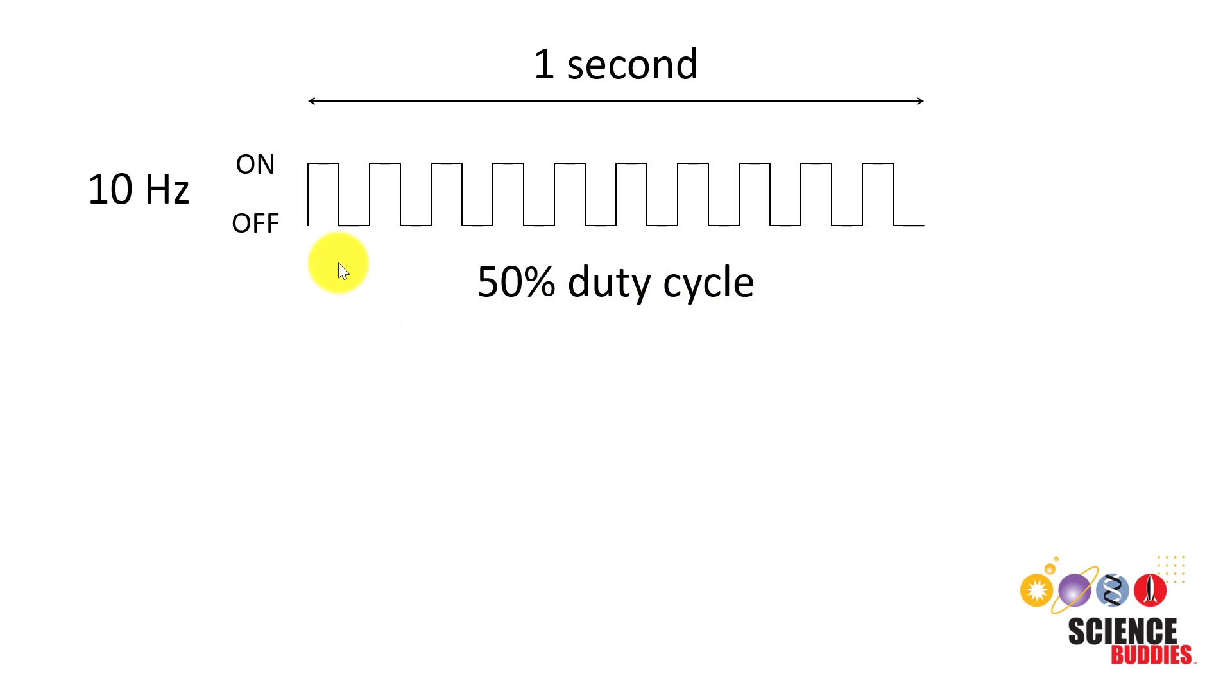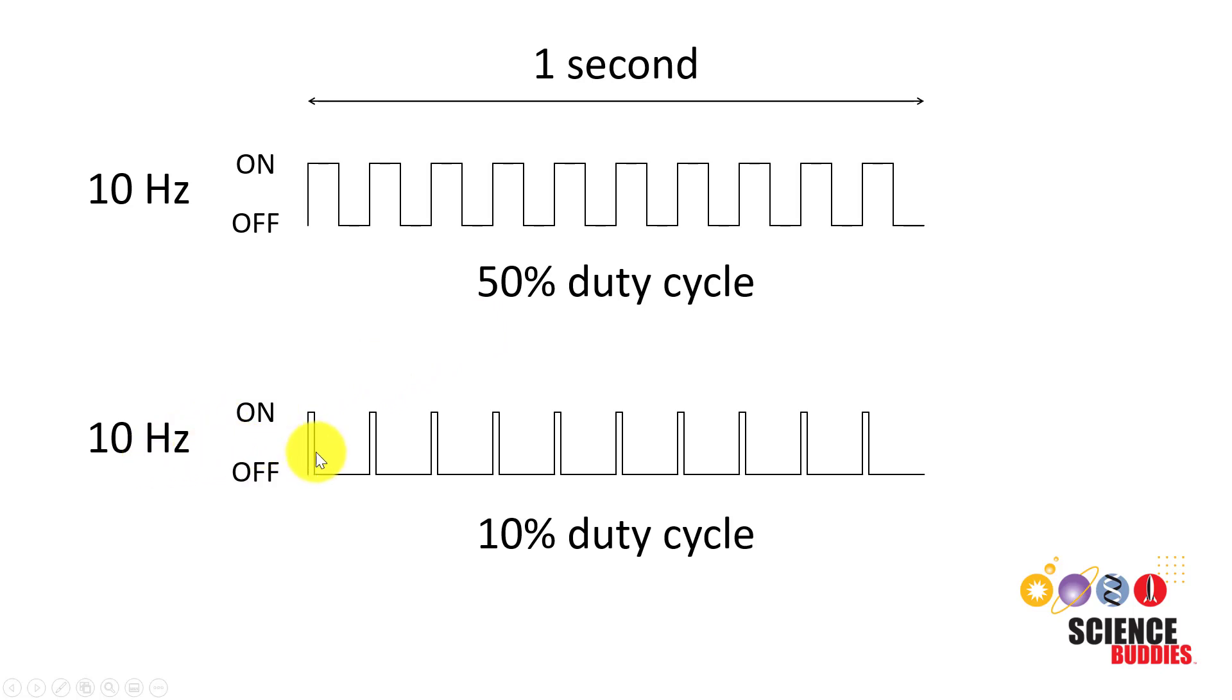The duty cycle is the percentage of time that the signal is high, or that the strobe is on, during each period. This graph shows a 50% duty cycle where the strobe is on for half of the period and then off for half of the period. So it is on for 0.05 seconds. You can change the duty cycle without changing the frequency. For example, this graph also shows a 10 Hertz signal with 10 flashes in one second, but it only has a 10% duty cycle where now the strobe is on for 10% of the period and then off for 90% of the period. So it is on for 0.01 seconds and off for 0.09 seconds.